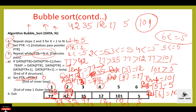Control transfers to step 1 for the second pass. Repeat step 2 and 3 for k equal to 2 to n minus 1, that is 2 to 5, and so on. This is the complete algorithm for bubble sort.